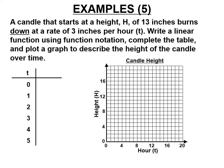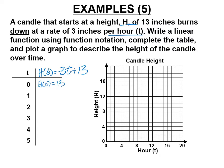A candle starts at a height of 13 inches and burns down at a rate of 3 inches per hour. Height as a function of time: H of T. The rate is negative 3 because it burns down, and the y-intercept is 13. This is in slope-intercept form: H of T equals negative 3T plus 13.